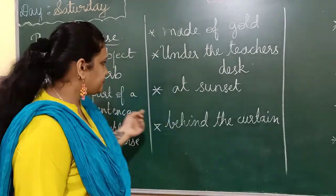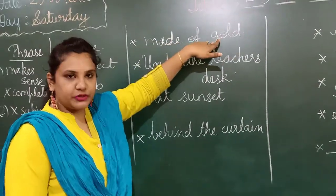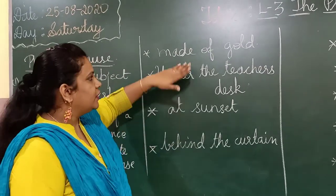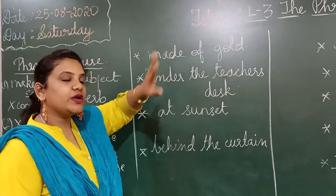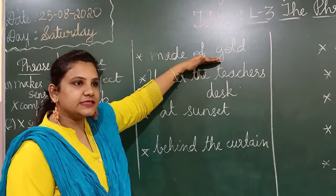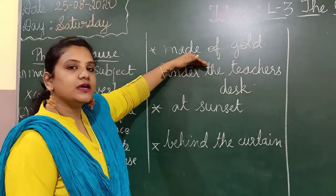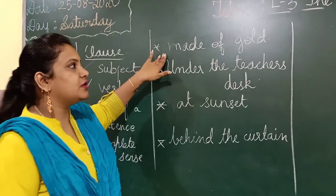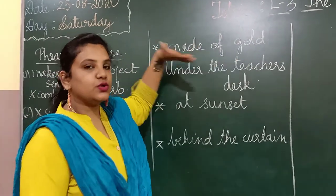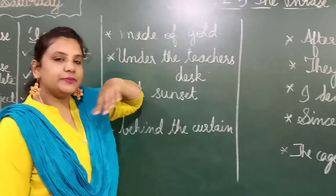Here are some examples of a phrase. Like 'made of gold.' See, 'made of gold' — this is a group of words. When you read this, you feel that something is made of gold, but you don't know what it is. So this is a partial sentence. Now if you add a subject and a verb to it, then it will make complete sense. Like, 'the earrings are made of gold' — here 'the earrings are' is the subject and verb, and 'made of gold' is the phrase.